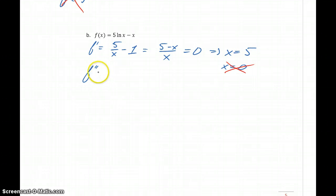We can find the second derivative to be negative 5x to the negative 2, or negative 5 over x squared. Evaluating the second derivative at 5 will give us negative 5 over 25, which is less than 0.